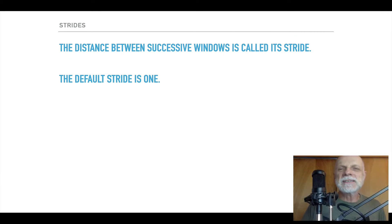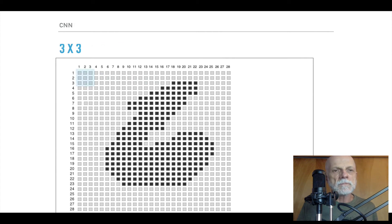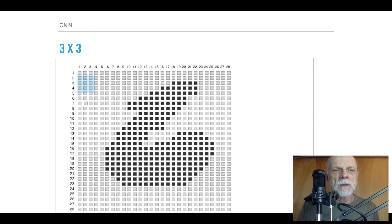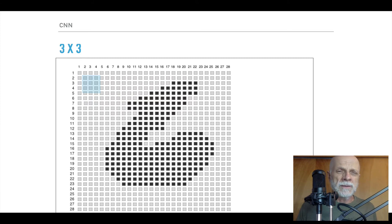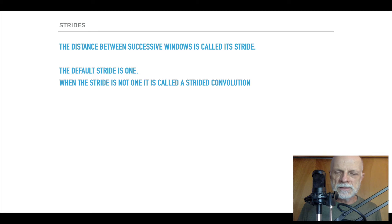The distance between successive windows is called the stride. When I showed you moving one by one, that's a stride of one. As we go through this image, we start with that window and shift it one, shift it one, and so on, then move down. Typically the stride is one. When it's not one, it's called a strided convolution, and we can specify what that stride is when we create these layers.